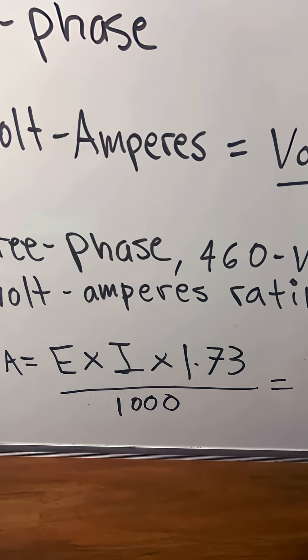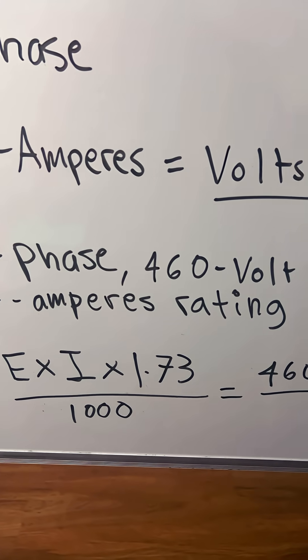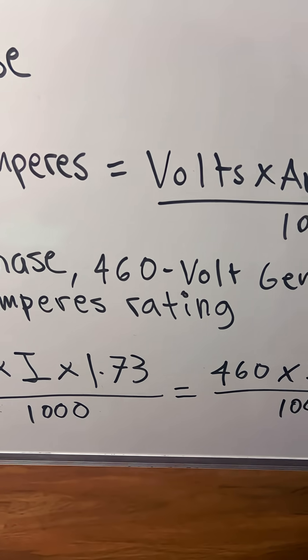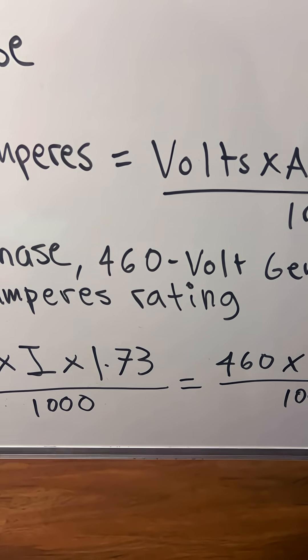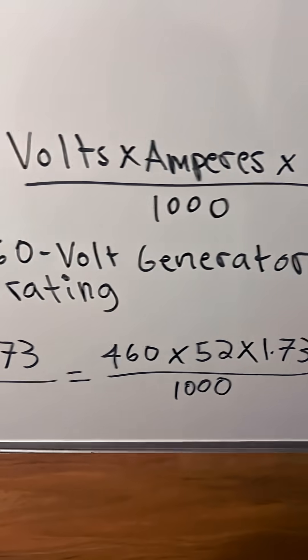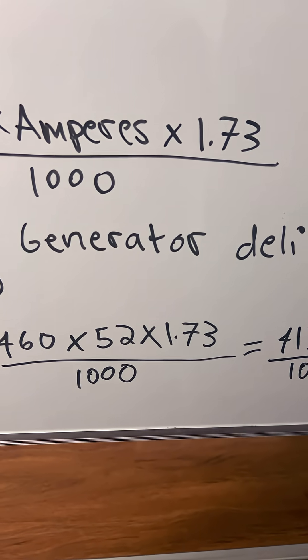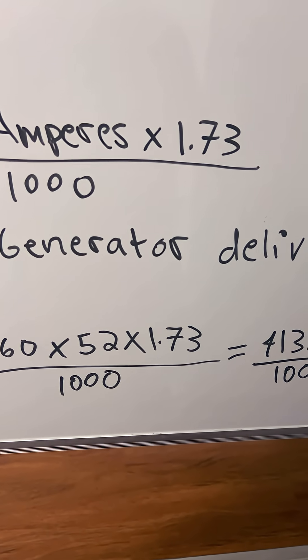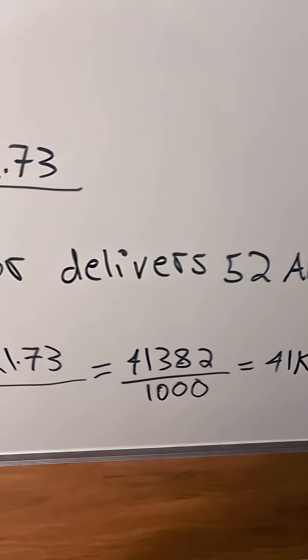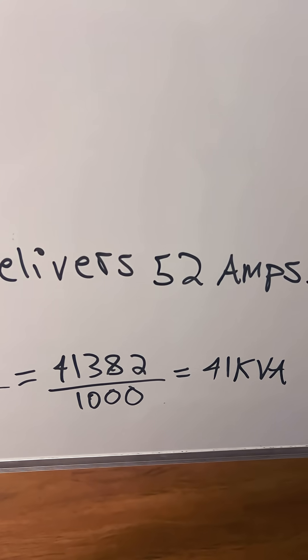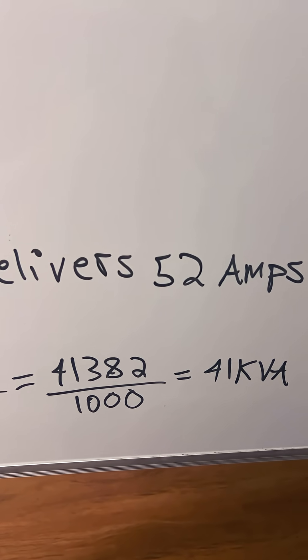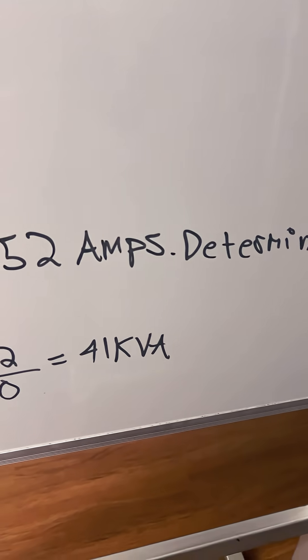the formula: KVA equals your voltage times the amps times square root of 3 (1.73) divided by 1000. So that equals 460 times 52 times 1.73 divided by 1000, and that will give you 41,382 divided by 1000, which equals 41